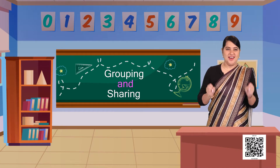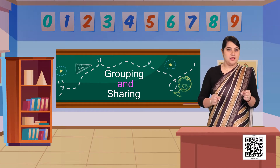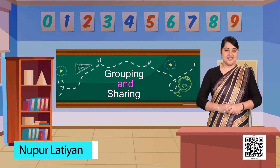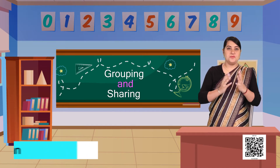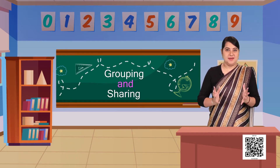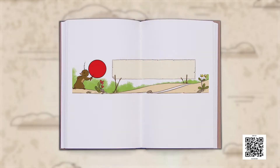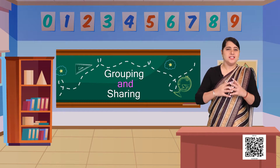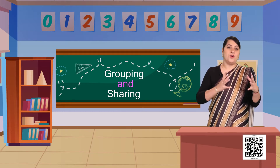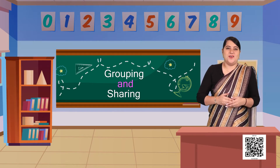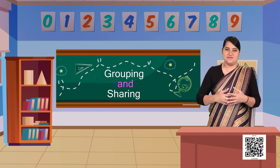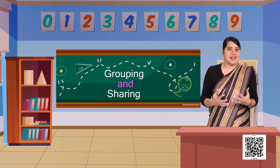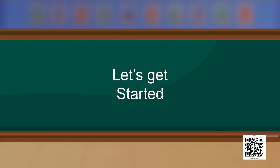Hello children, how are you all? I am super excited because today from your book Joyful Mathematics, we are going to be talking about chapter 8 which is called grouping and sharing. We all know that of all the things that are around us, we can always make groups and we can always share them with our friends. Are you excited as I am? So let us get started.